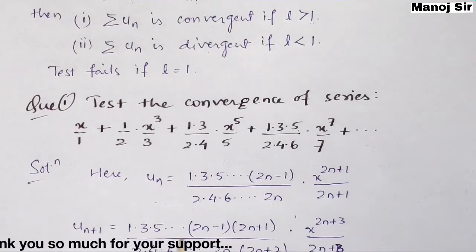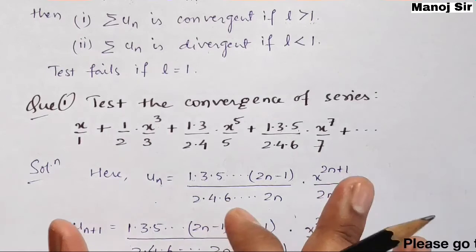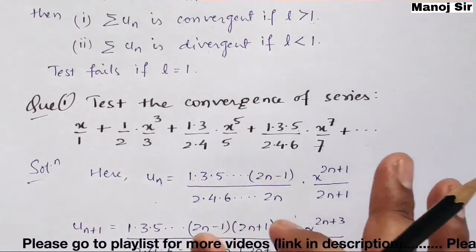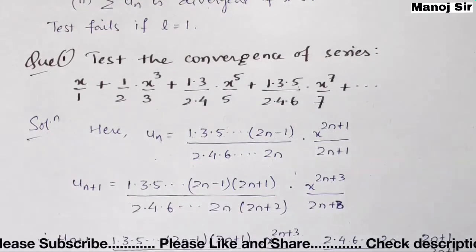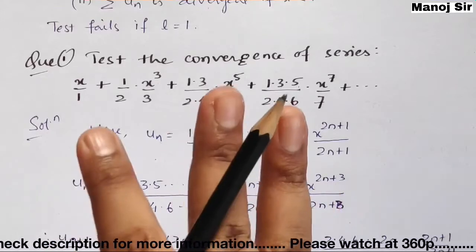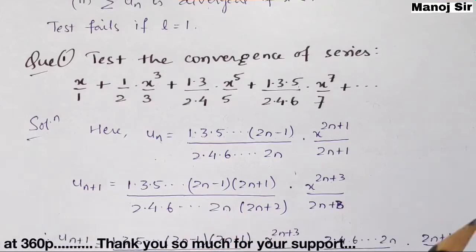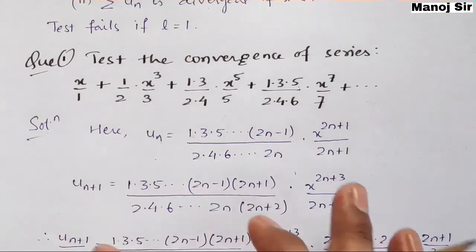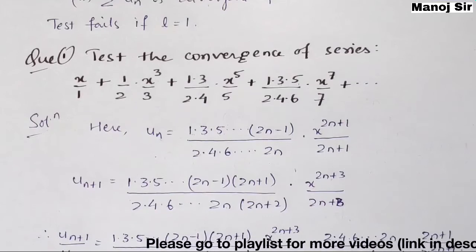Now after finding un, we need to find un+1, because I am going to apply D'Alembert's ratio test first, and if that test fails I will take the help of Raabe's test. From videos 14 to 16 I covered three problems on D'Alembert's ratio test, so this should be familiar.